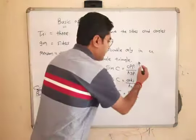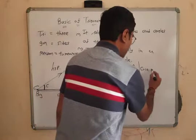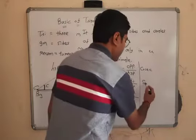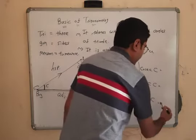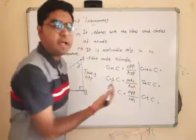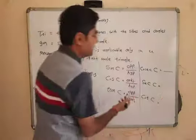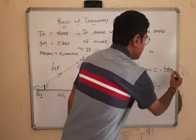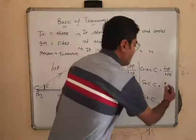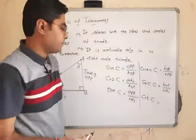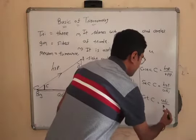The remaining three trigonometric ratios are exactly the reciprocals of these three. The first is cosec, the second is sec, and the third is cot. For angle C: cosec is the reciprocal of sine, so the formula is hypotenuse upon opposite. Sec is the reciprocal of cos, so the formula is hypotenuse upon adjacent. Cot is the reciprocal of tan, so the formula is adjacent upon opposite.